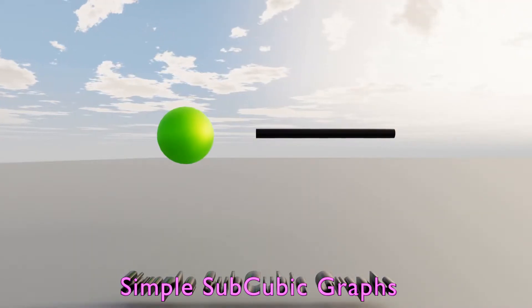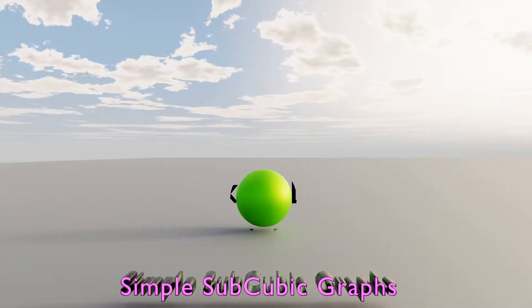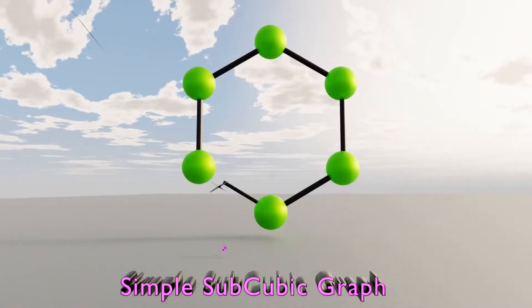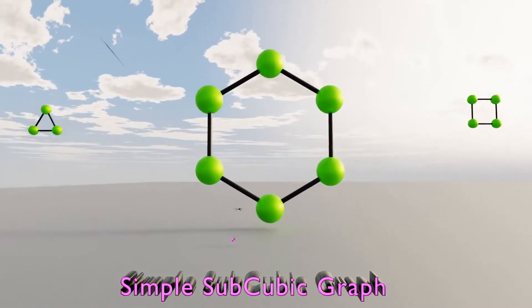A simple subcubic graph can have a single vertex. It can also have many vertices connected with edges. Simple Subcubic Graphs can be of any shape.